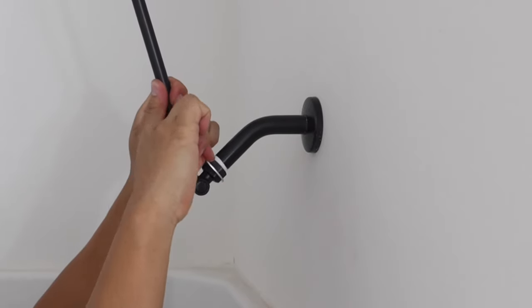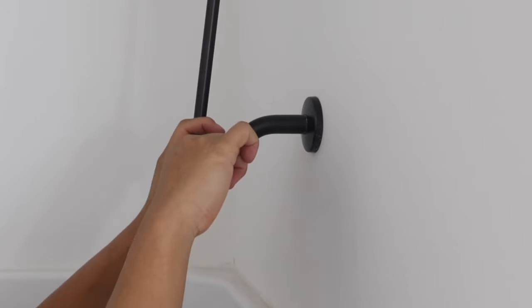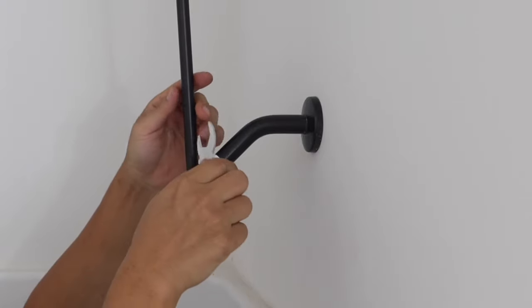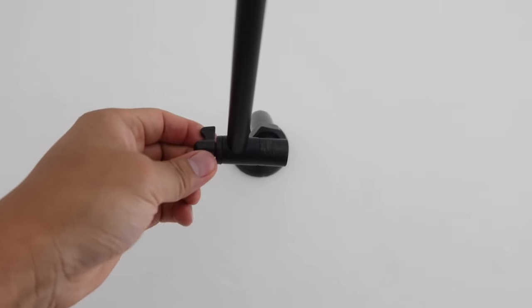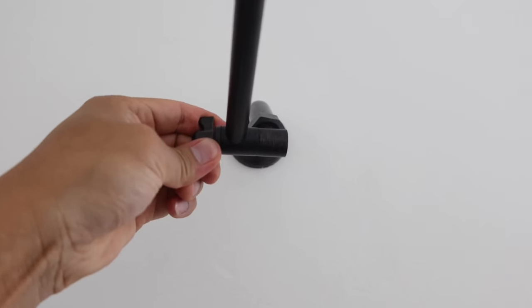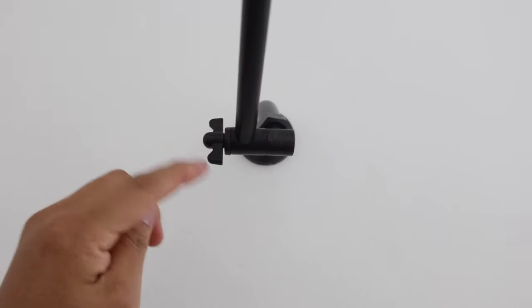After this is tight what we're going to do is lower the arm down close to horizontally and then we are going to lock this nut into place. Make sure this is tight enough and secure in place. We do not want to adjust this once it is in place so make sure everything is good to go.